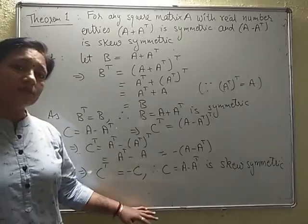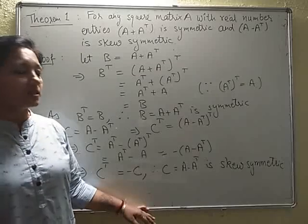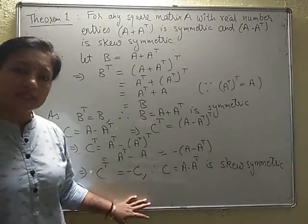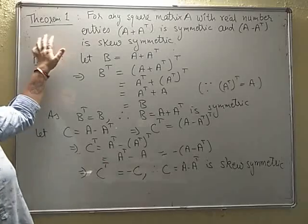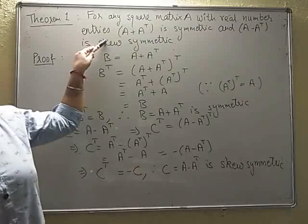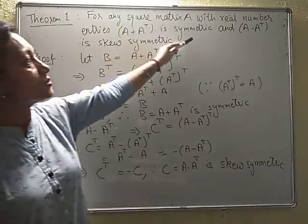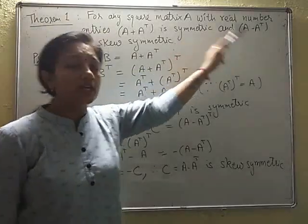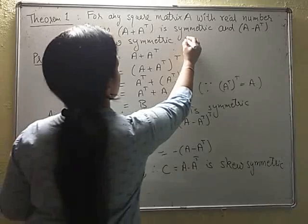Now students, as you are aware what a symmetric and a skew-symmetric matrix is, let us discuss some theorems related to it. The first theorem states: for any square matrix with real number entries, the sum of A and A transpose will be a symmetric matrix, and the difference of A and A transpose will be a skew-symmetric matrix.